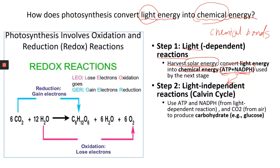The second step is called light-independent reactions, which means this process does not require light, so it can happen during daytime or at night. Another name for it is the Calvin cycle. In this cycle, you use the ATP and NADPH produced in step one to make carbohydrates — glucose. This process also requires CO2, carbon dioxide. You need energy and electrons, and then carbon dioxide to synthesize glucose.